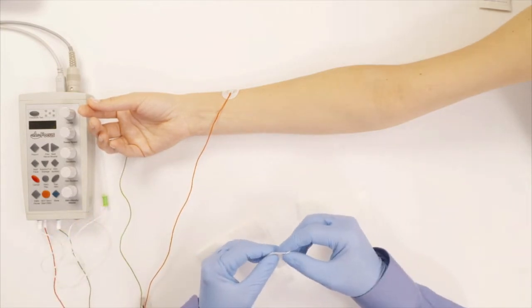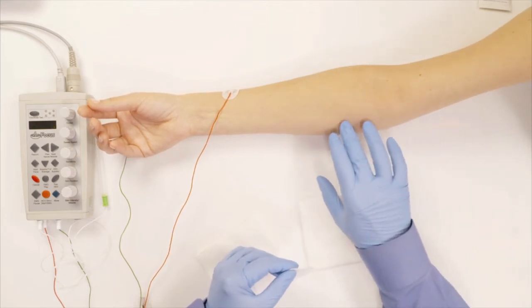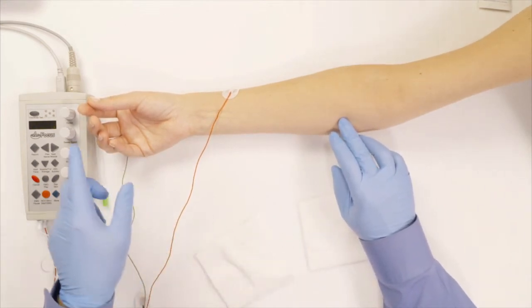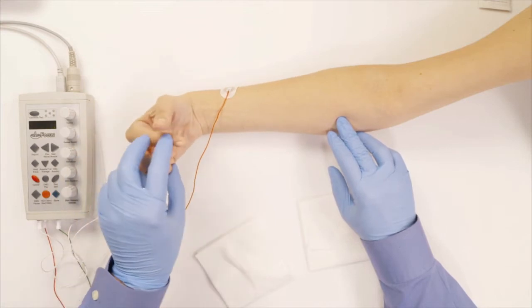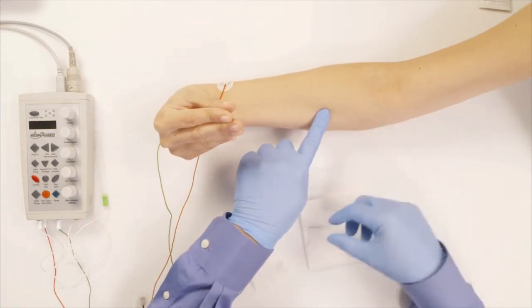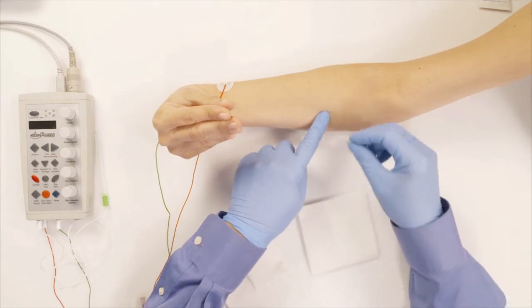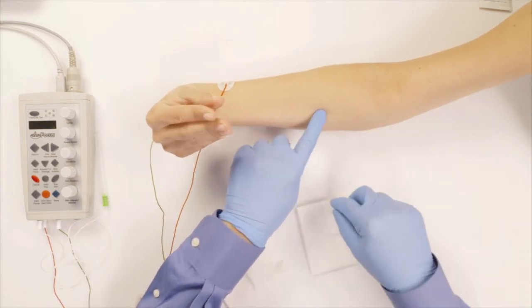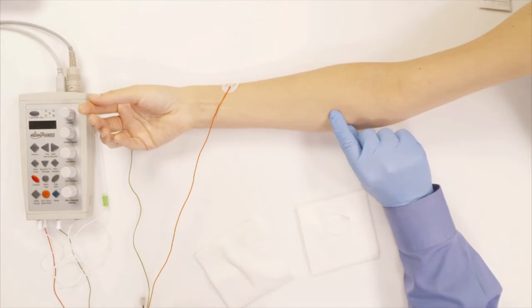The next muscle is the flexor carpi radialis. It's usually right here. In order to activate it I ask her to point your fingers to her elbow. As soon as she does that, I know where that muscle is. I can feel it because it's tightening up. Now relax. I know that the next place I'm gonna stick the muscle is gonna be right here.